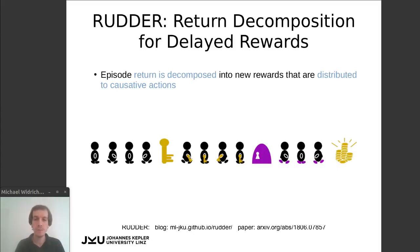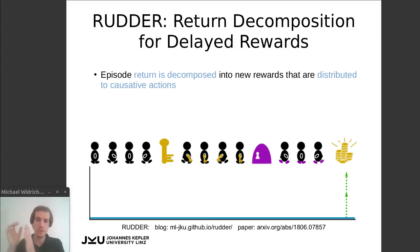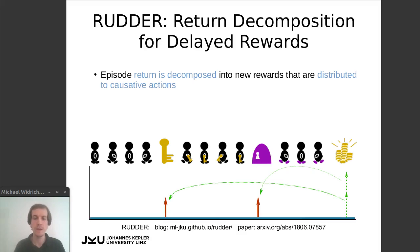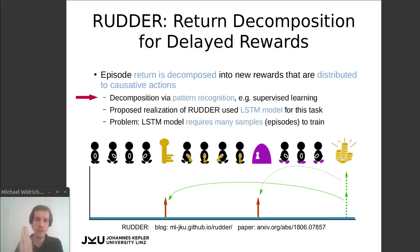How does RUDDER work? RUDDER decomposes the return at the end of an episode into rewards and assigns these rewards directly to the state-action pairs that it believes have caused the return. Therefore, the reward is given immediately at the state-action pairs that are important for the return of the episode. RUDDER relies on pattern recognition methods to identify these important state-action pairs, and it can learn to detect important patterns by looking at other completed episodes.